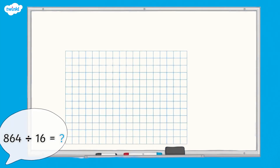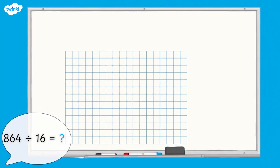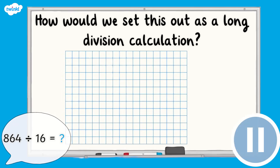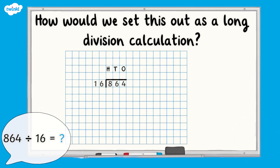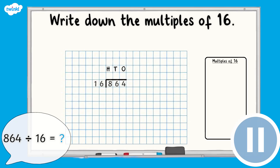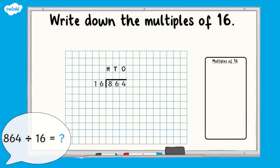Now it's your turn. Let's work through this division calculation together. The calculation is 864 divided by 16. How would we set this out as a long division calculation? First of all, we need to list the multiples of 16. Pause here and write the first 10 multiples of 16. Think carefully about which times table would help you with this.